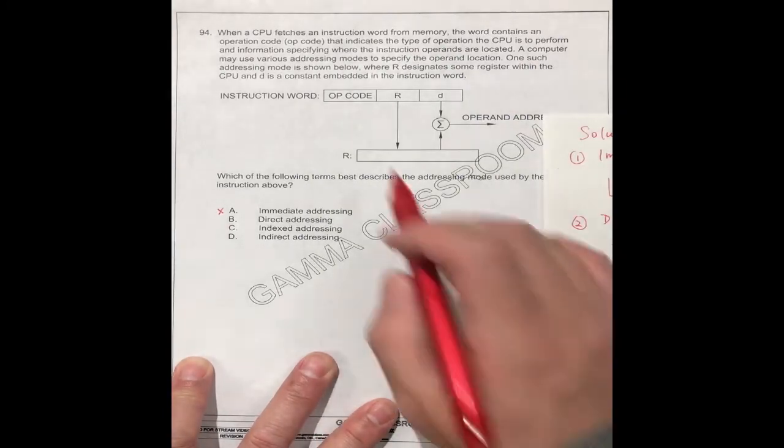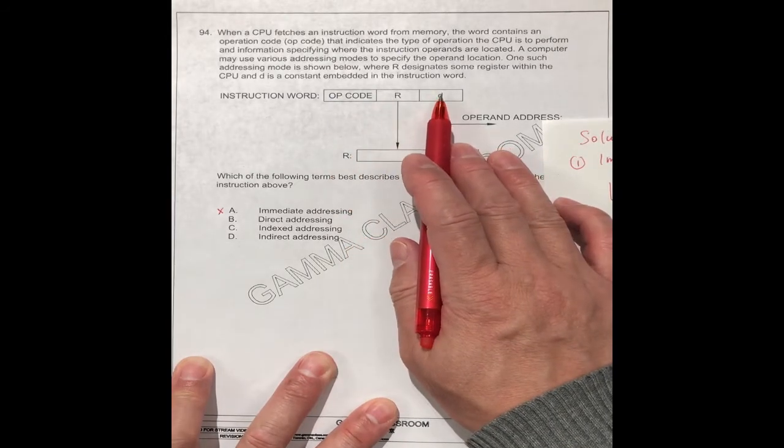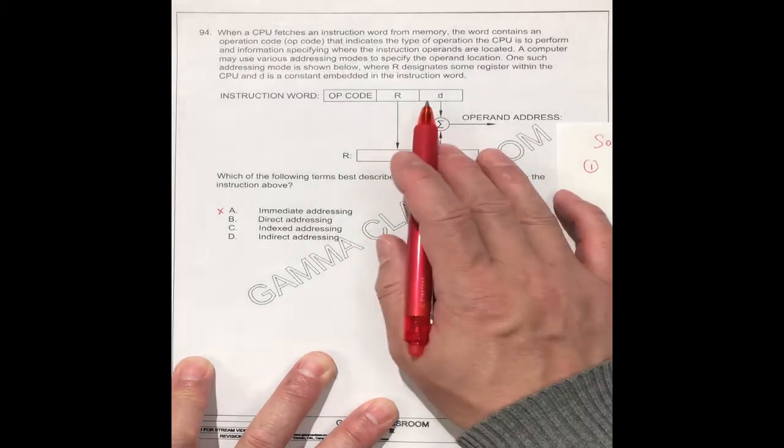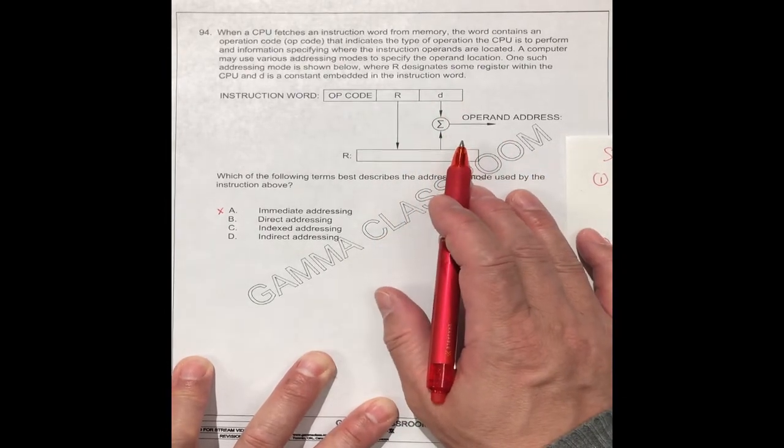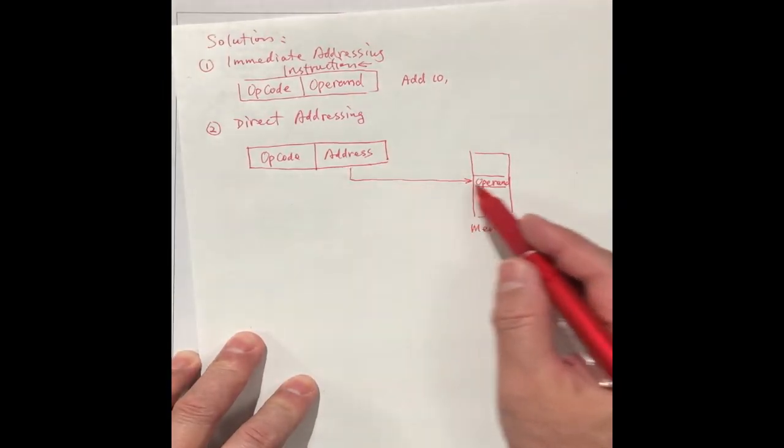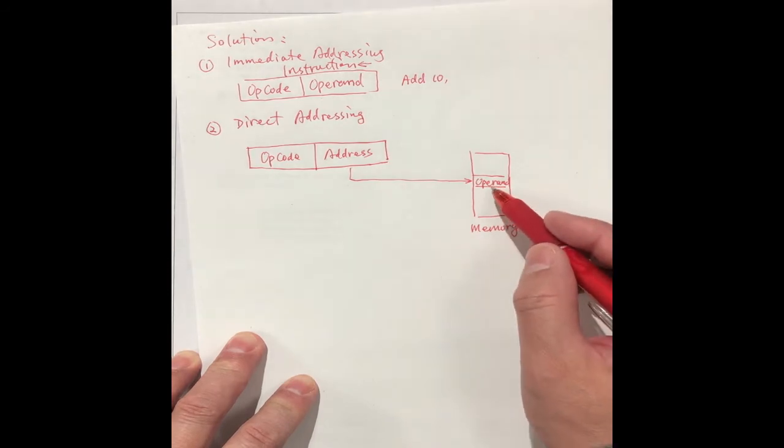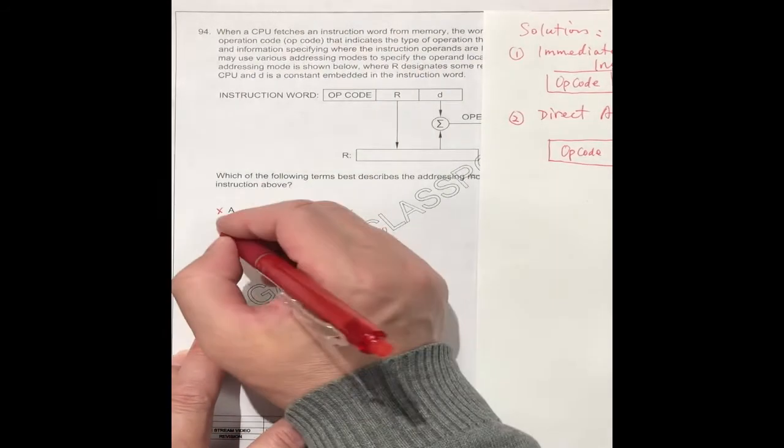For our question, you see, for our question, they have the register. This is embedded. It's not this one. So this is not the direct addressing. For the direct addressing, it should be directly addressed to the memory, to the operand. So this is not the correct answer.